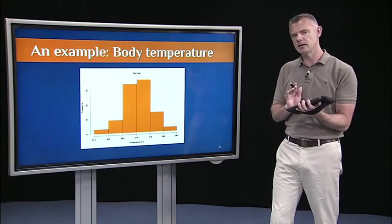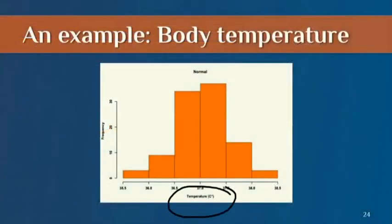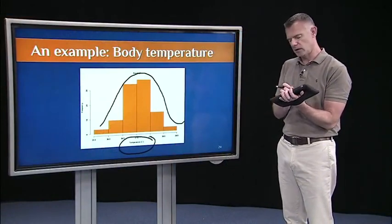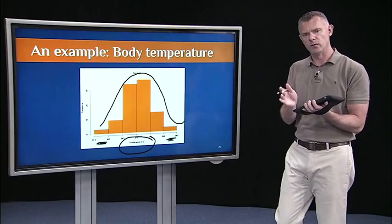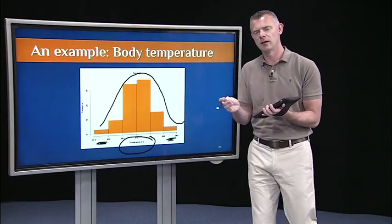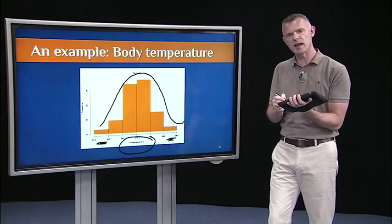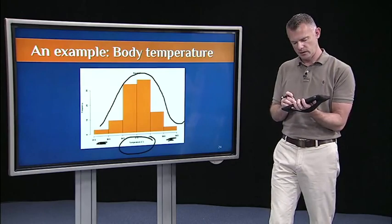Here's the same exact data plotted in terms of Celsius. On the x-axis, we're plotting temperature in degrees Celsius. Again, it's a normal distribution. We did these graphics in R, which you've seen a little bit in the labs. R bins the data differently, so you can see the width of the bins differs. You can control that using the R function hist and the argument breaks.